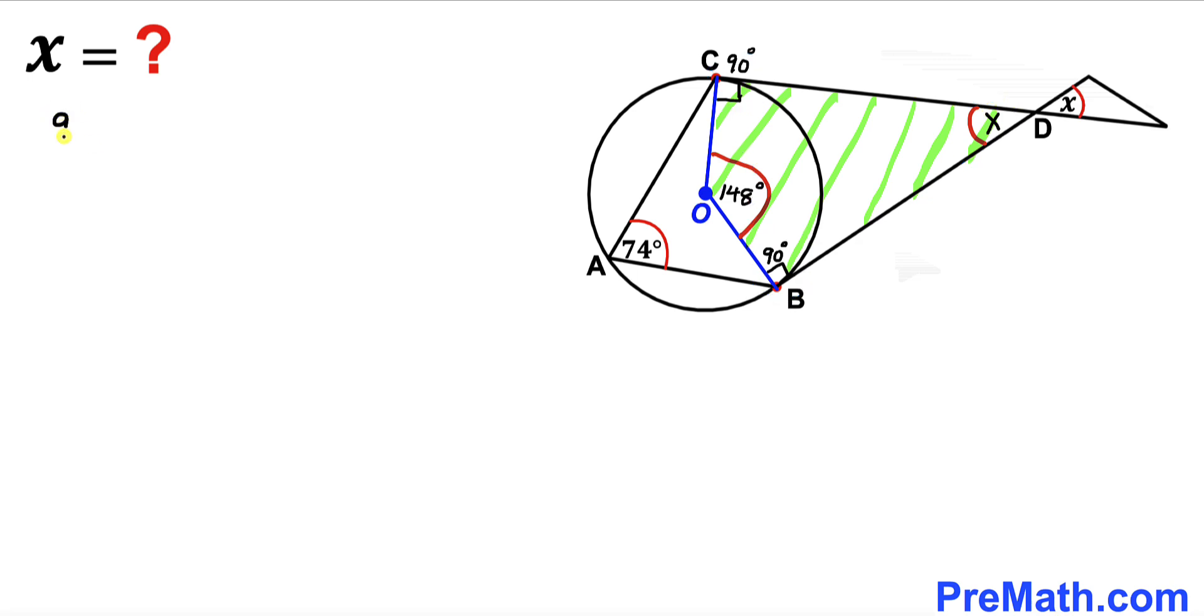Therefore let me write down 90 degrees plus 148 degrees plus 90 degrees plus angle x and we know that this must be equal to 360 degrees. Now let's add the like terms on the left hand side. If we add all these angles that's going to give us 328 degrees plus angle x equal to 360 degrees. Now let's subtract 328 degrees from both sides.